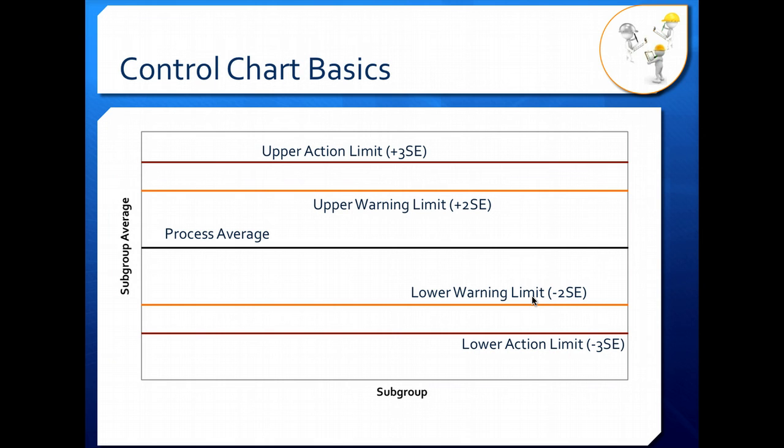Regardless of what type of control chart you have, they all have basic features. So our subgroup or our sample number, a subgroup is a collection of samples, is posted on the X axis. The average of those subgroups is posted on the Y axis. Our process average is shown by this black line. And that's the average that's coming out of our process. It's not necessarily the average we want. So keep that in mind that your process may not be able to do what you want it to do, or it may be able to do what you want it to do but you don't have your different parameters set properly so you get the average out that you want.